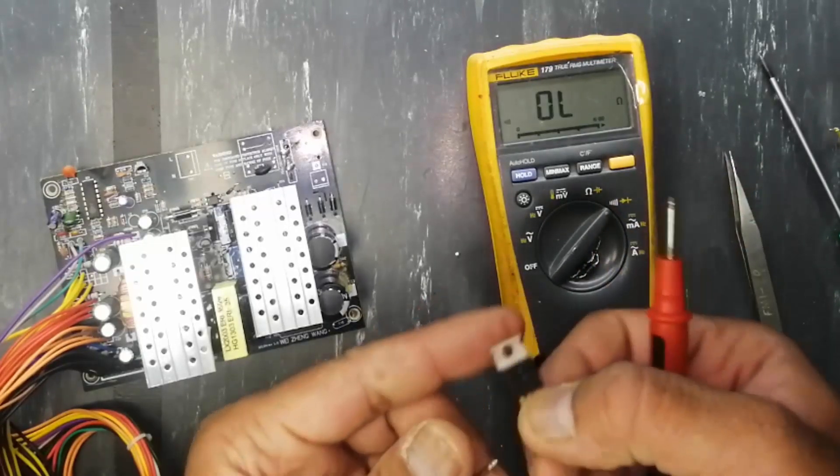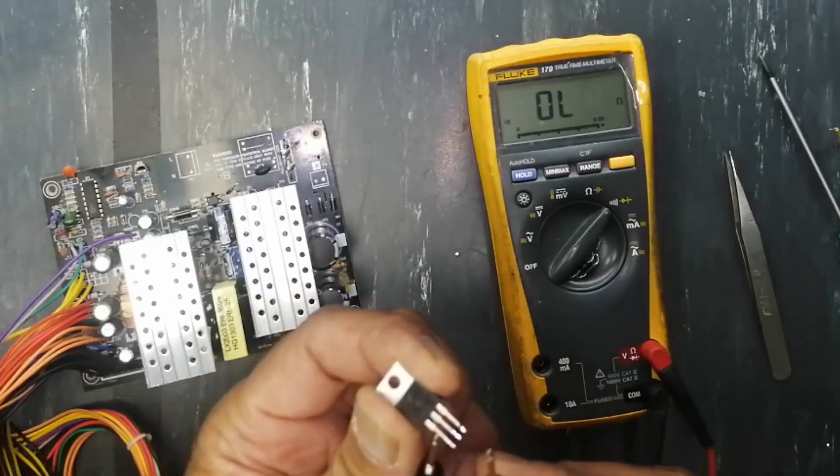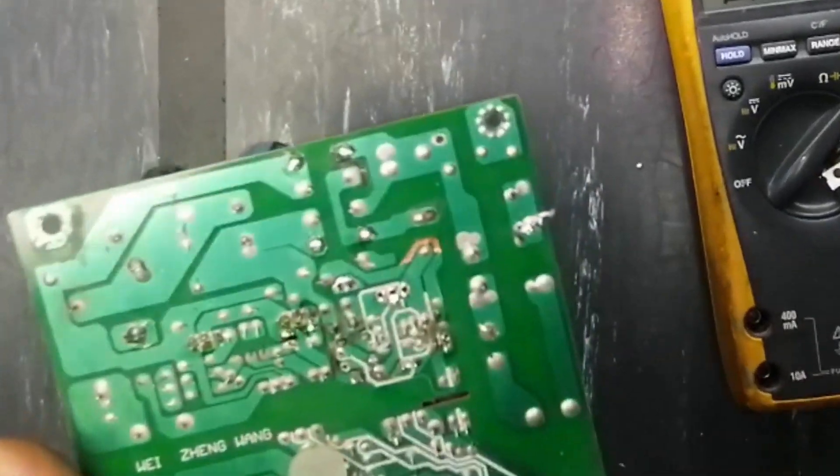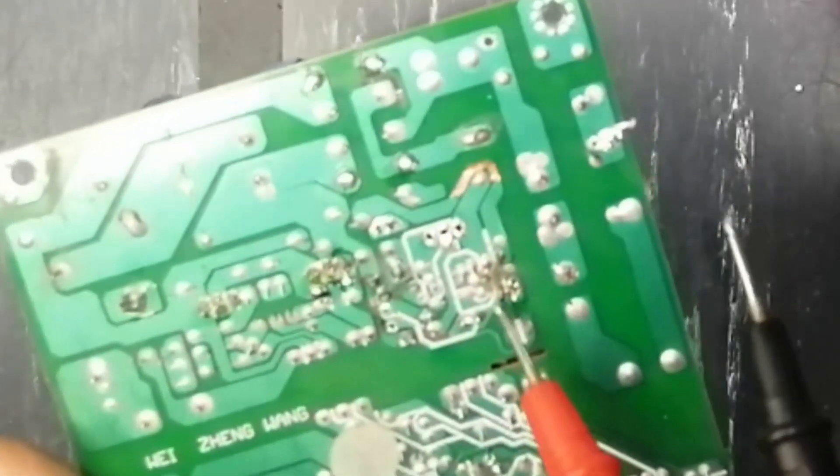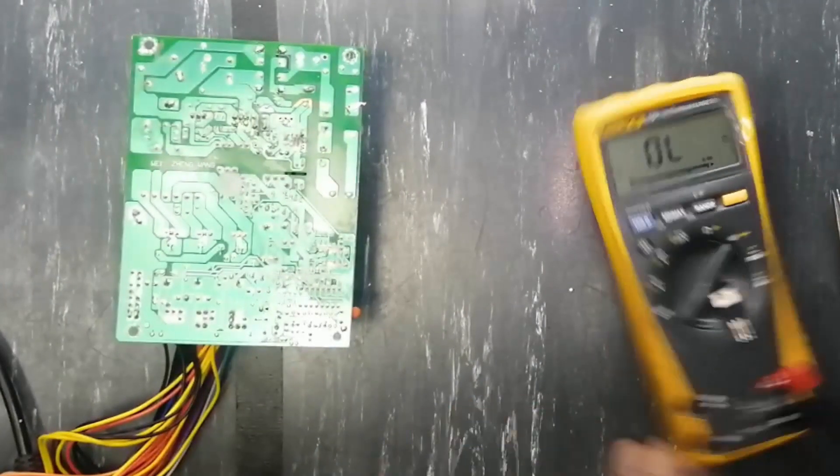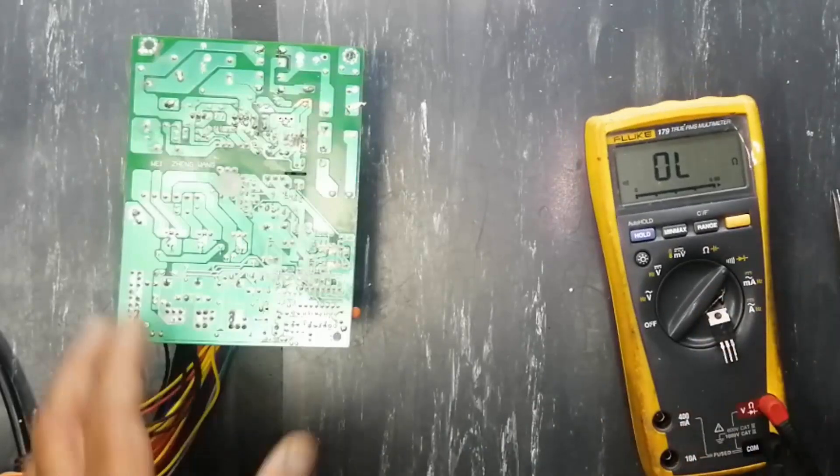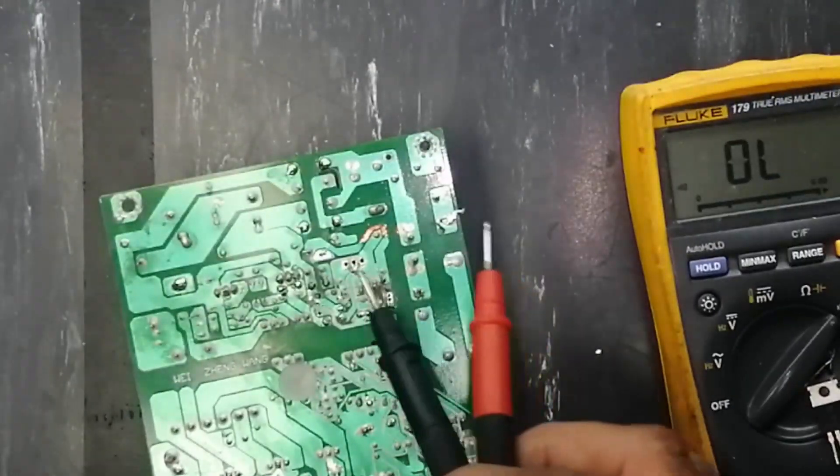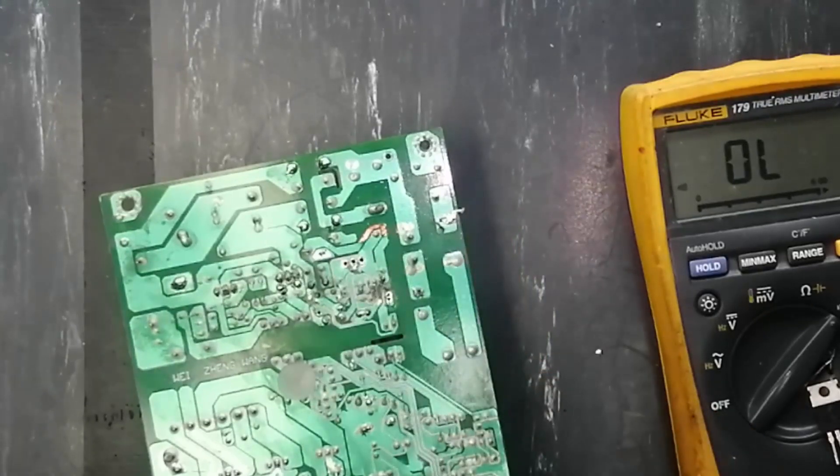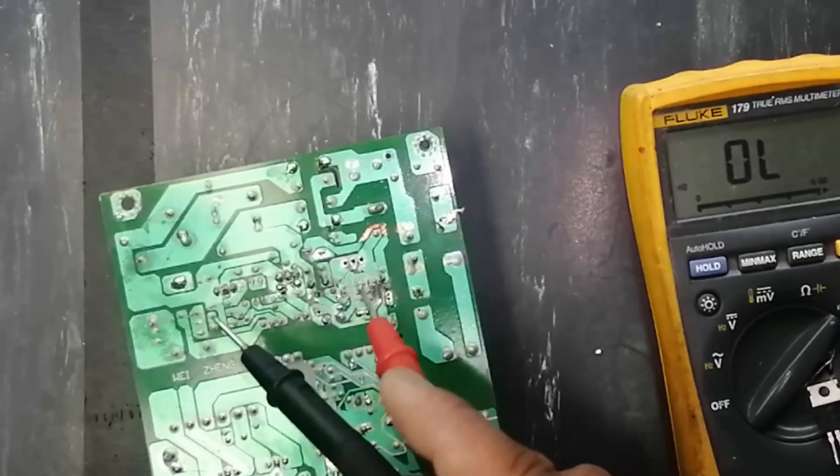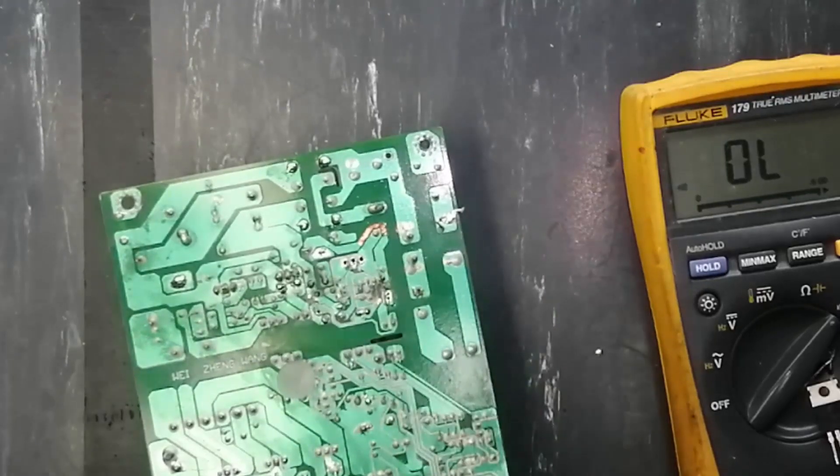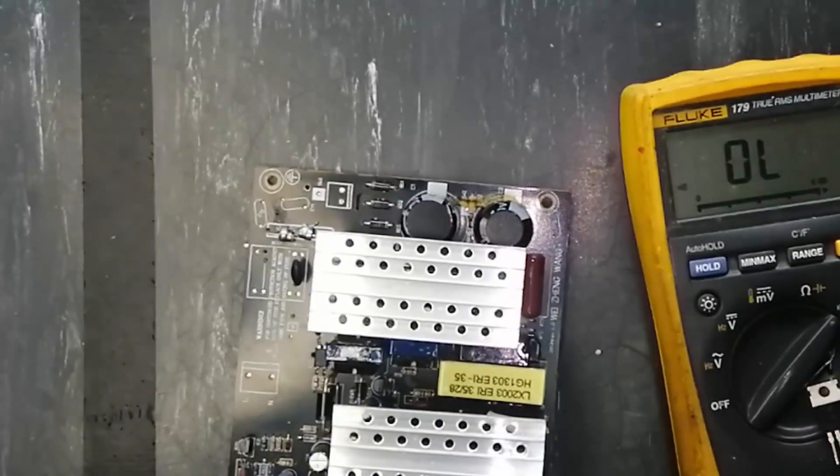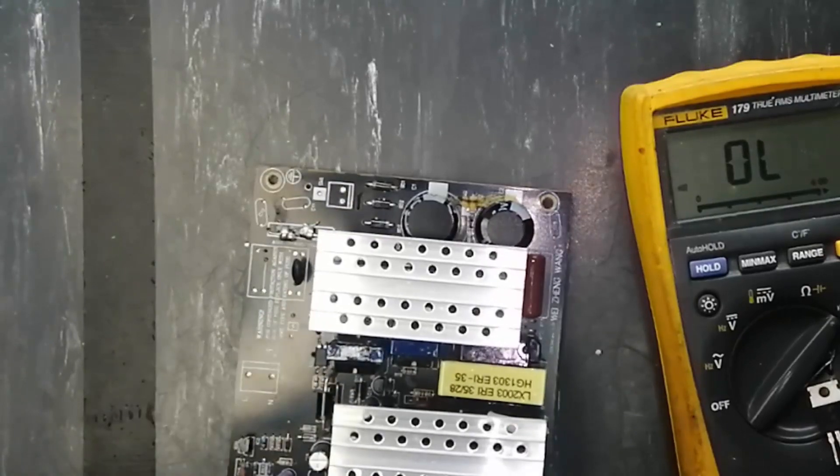And this transistor, it was short base to emitter. So this short circuit made damage in the tracks. Suppose if we have some special case - a big area is damaged, a big area of this PCB, this area is damaged. What will we do?